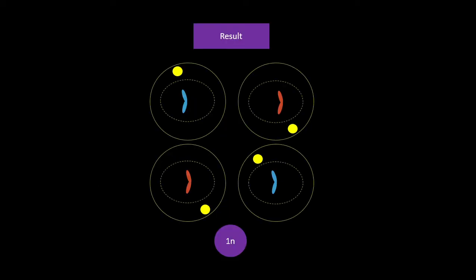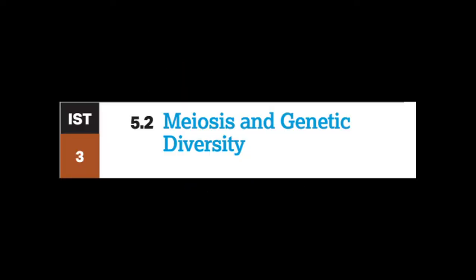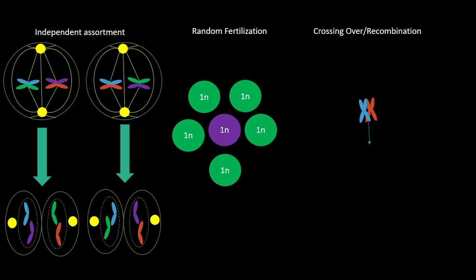In meiosis 2, all the steps are exactly the same except there is no pairing of the homologous chromosomes, because there is no duplicate DNA anymore like there was with the 4n beginning cell. The entire process repeats and finally we are left with four 1n gametes.